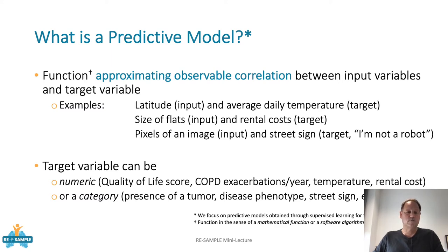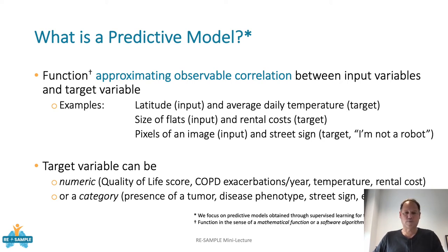Or more classically, from image data — you have images with different pixels at different points in the image — and from there you want to detect if there is a street sign, and especially which street sign, such as a stop sign. This is typically what you help annotate or produce in those 'I am not a robot' CAPTCHAs.